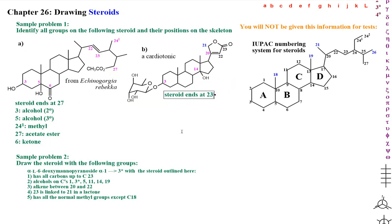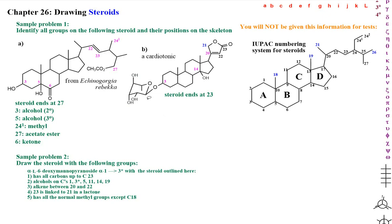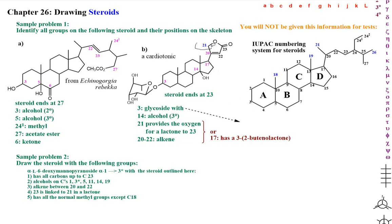Let's work on naming the steroid, then we're going to name the sugar. I made this into an L sugar — it's called rhamnose, but I want you to give me its real name in terms of deoxy on 6 and all that. We have a glycoside on C3. The methyl at C21 forms a lactone with the carbonyl on C23 — 21 provides the oxygen for a lactone to 23. There's a double bond between 20 and 22.